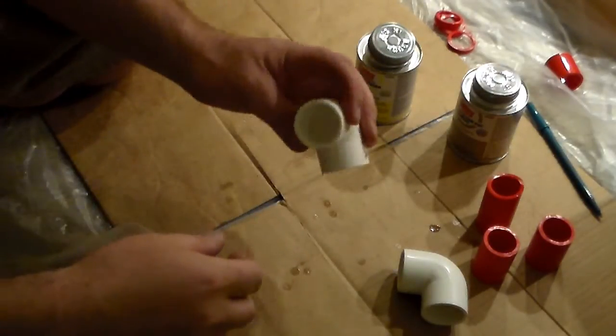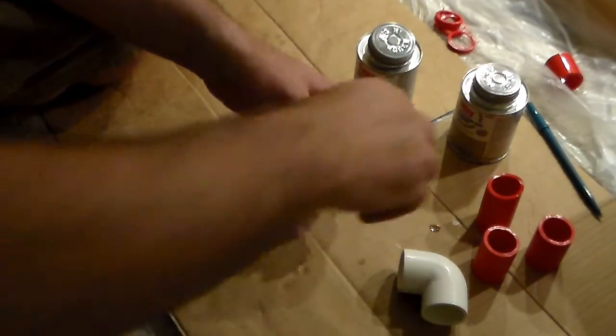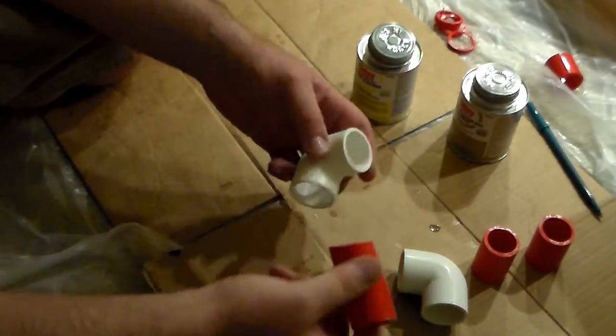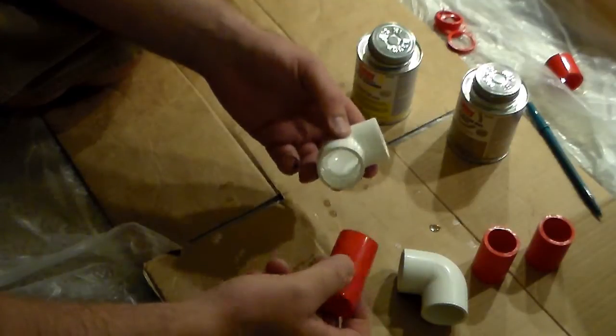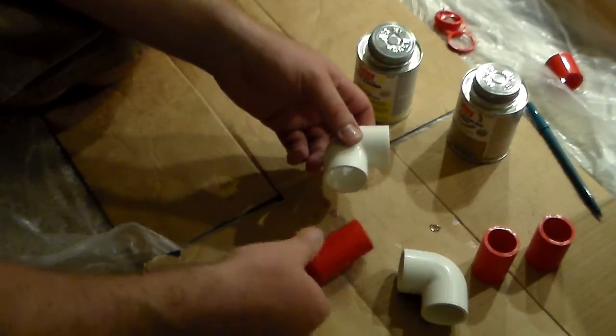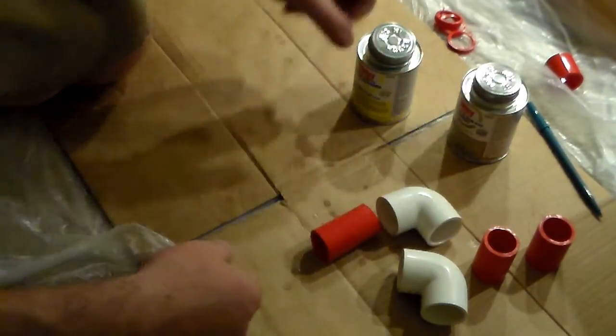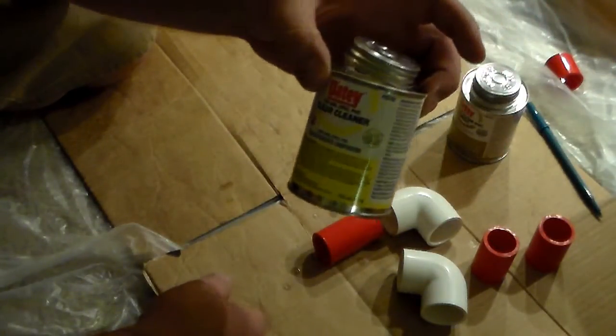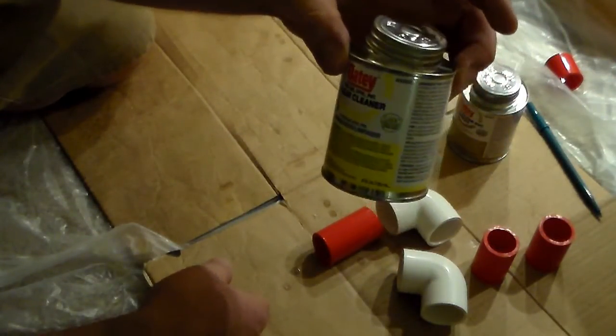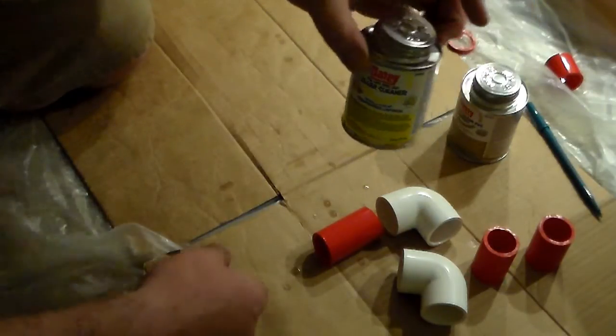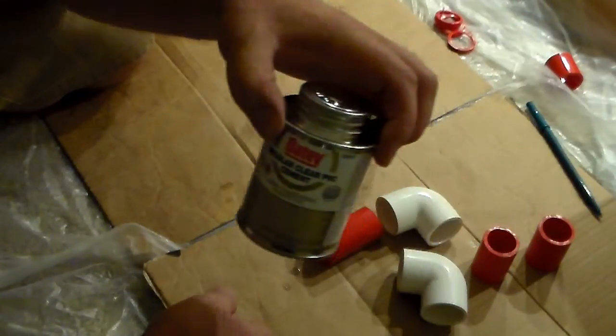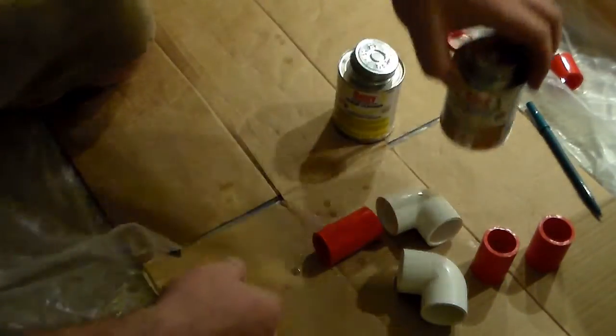I almost forgot this was a how-to deal. So I'm going to do a quick one-two-three on PVC, how to fuse them together or whatever you want to call it. Basically you got your cleaner, which I talked about in that first part. So this is a clear cleaner. Again, you won't have any of that purple runoff. That'll be first. And then you got your regular PVC cement.